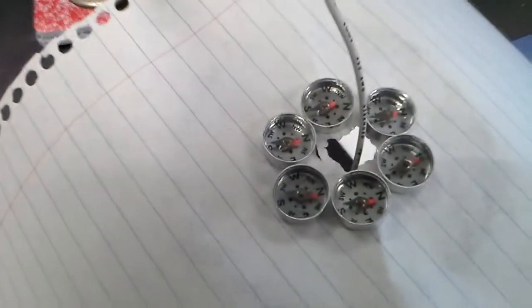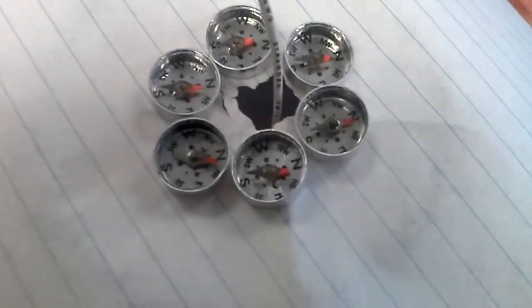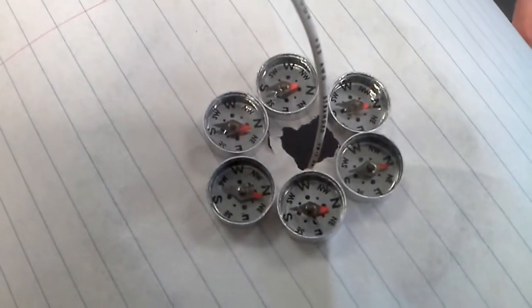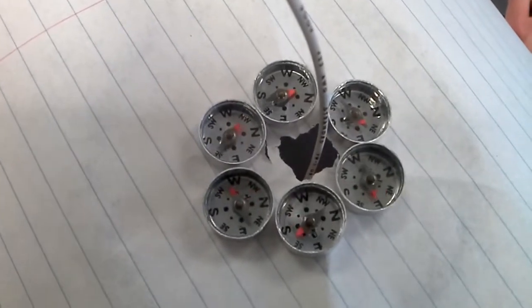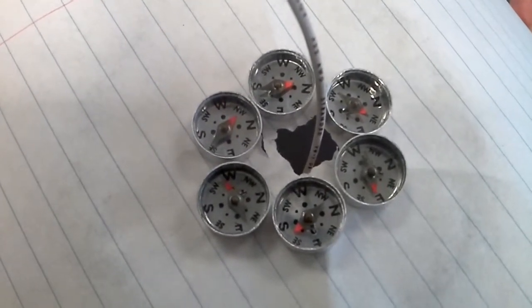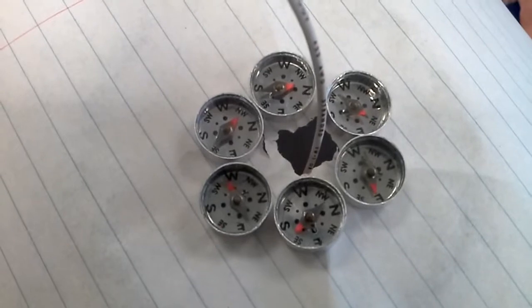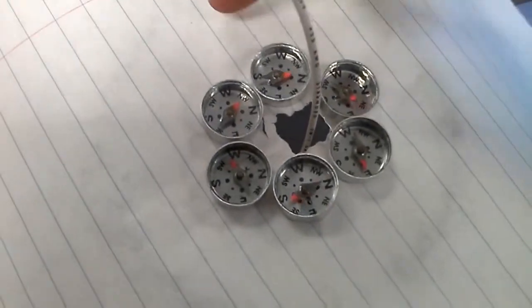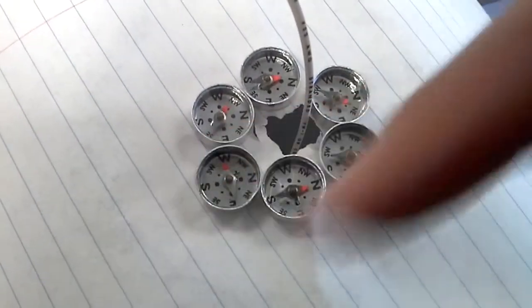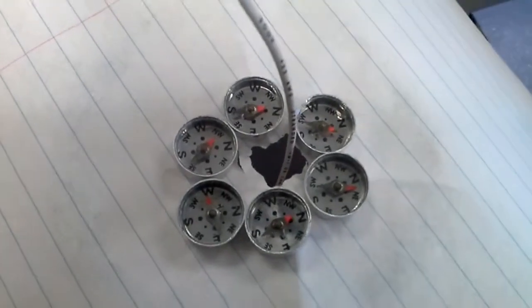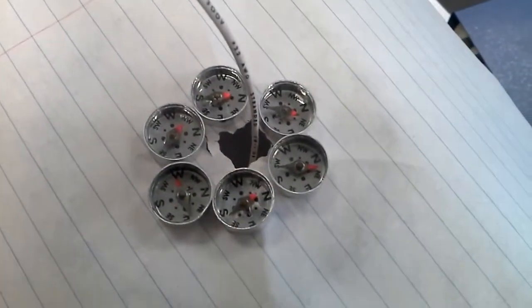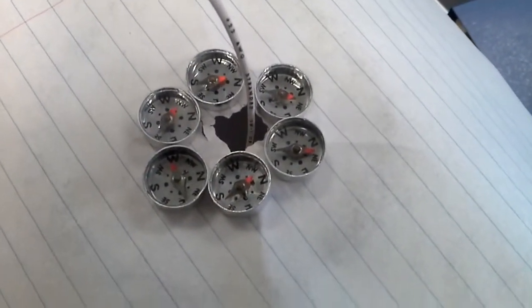So back to the compasses, they're all lined up with magnetic north, and now I'm going to switch on the power source, and we find that they all move. In fact, they all move so that they kind of point in this circle around the wire. And that's the magnetic field that's generated by the wire being turned on.